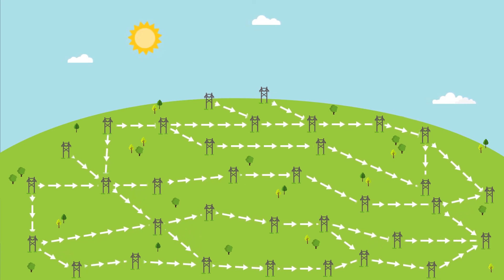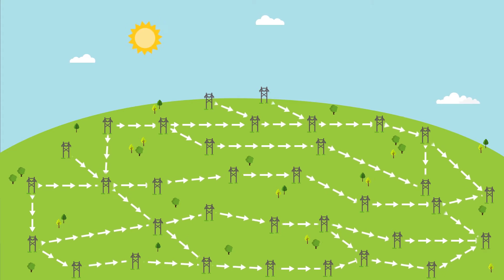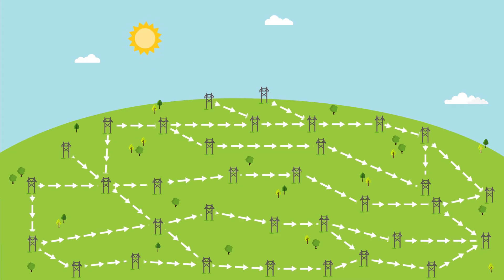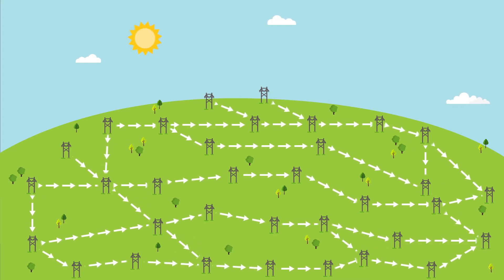The same idea applies to how the system is configured. Whenever equipment, like a transmission line or transformer, are removed from the system, angles will spread apart. This is another indicator of stress.